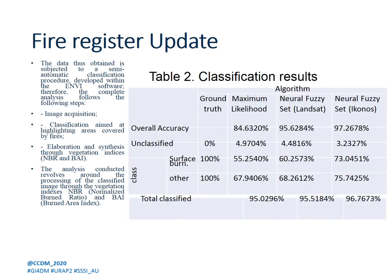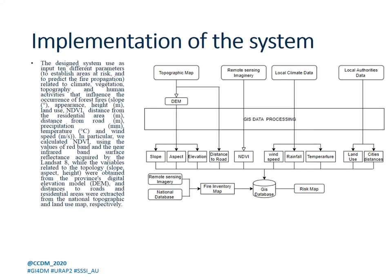Here are the classification results, followed by the system implementation. The system uses, as input, 10 different parameters to establish areas of risk and to predict fire propagation, related to climate, vegetation, topography, and human activities that influence the occurrence of forest fires: slope, aspect, elevation, land use, NBR, distance from residential area, distance from road, precipitation, temperature, and wind speed.